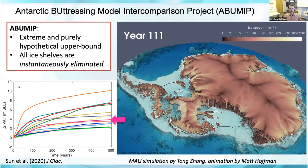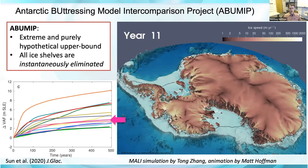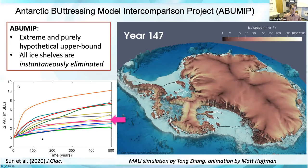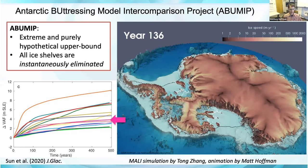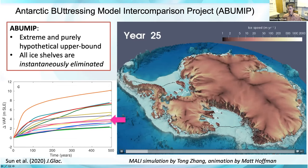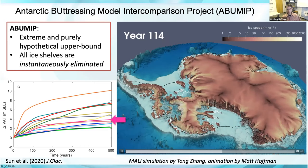We also participated in the Antarctic Buttressing Model Intercomparison Project, ABUMIP, which is an extreme and purely hypothetical upper bound mass loss for Antarctica where all ice shelves are instantaneously eliminated and prevented from reforming. After about 500 years, MALI predicts sea level rise of about three meters from Antarctica — again in the middle of the pack. In the animation, you can see that West Antarctica collapses pretty spectacularly with this high-end extreme forcing.